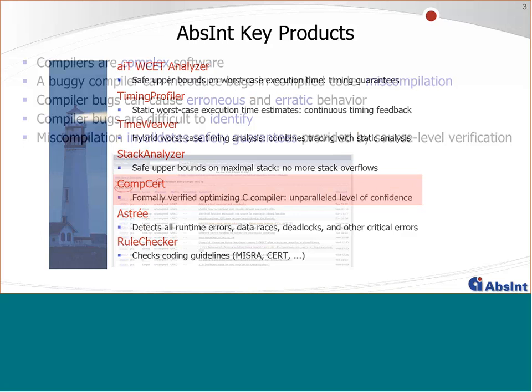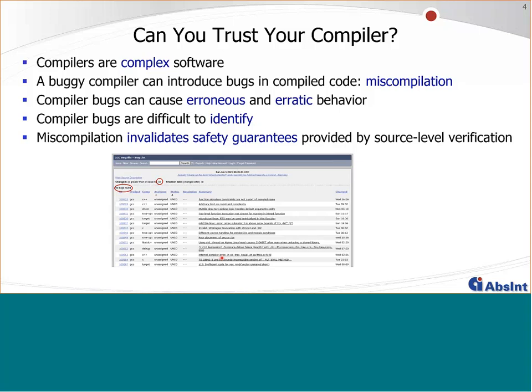Can you trust your compiler? A compiler takes a program in a higher-level programming language and transforms it to machine code for some target processor. This sounds simple, but it's actually very hard — even in the complexity theory sense, since the backend involves NP-complete problems. Compilers run sophisticated algorithms, and as complex software projects, they can contain bugs. They might crash, refuse to compile code, or — worst of all — silently generate wrong code where the generated machine code does something different than what was programmed at the source code level.